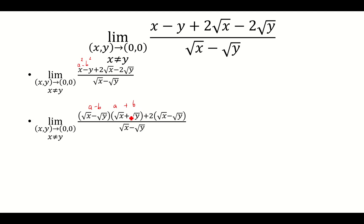And now both of these, and I also factor out the 2 here. Both of these terms have a square root of x minus square root of y. So I'm going to factor that out. And I'm going to be left with square root of x plus square root of y plus 2.